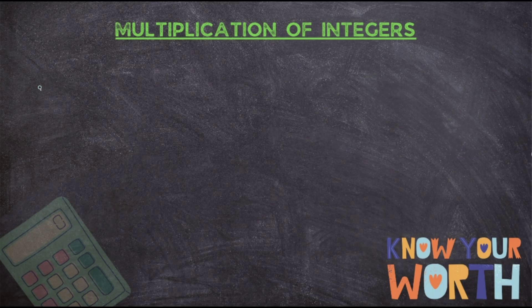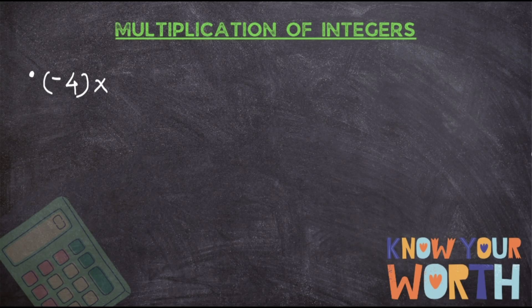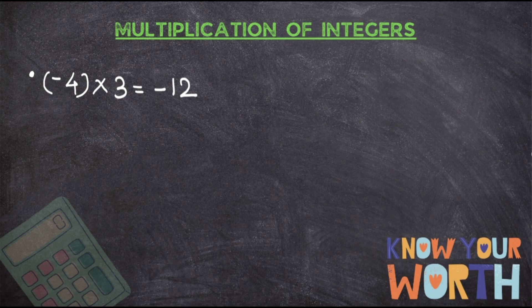Now let us take the third rule, which says when you multiply a negative number and a positive number, the answer you get is a negative number. The first example is minus four into three. One number is negative, one is positive. First ignore the sign and multiply: four threes are twelve. Since one is negative and one is positive, the answer will be negative twelve, that is minus 12.